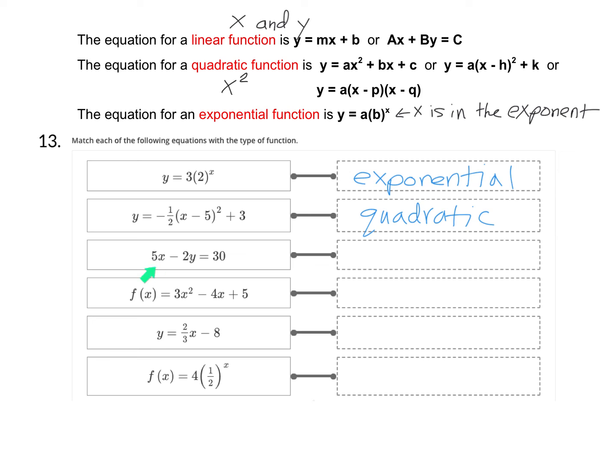The next equation is 5x minus 2y equals 30. You can see that matches this format, Ax plus By equals C. It's a linear function in standard form. You're going to pick linear from the matching choices.